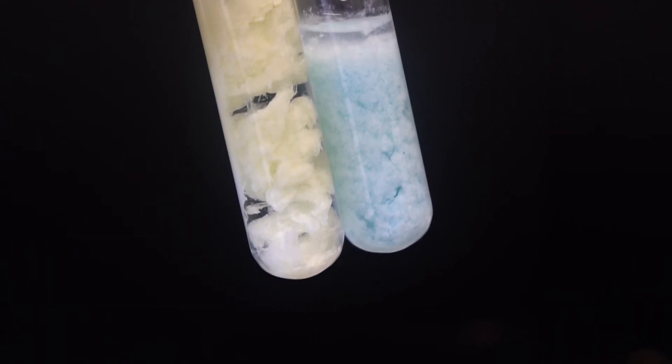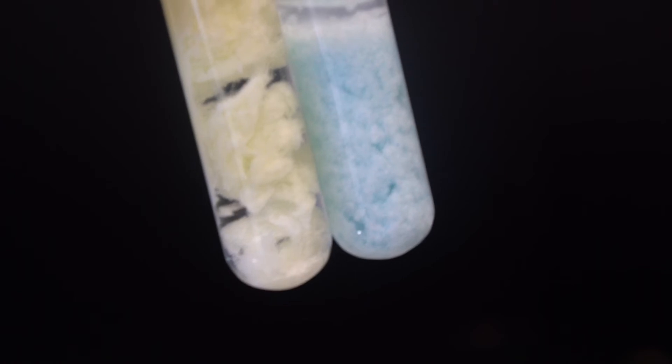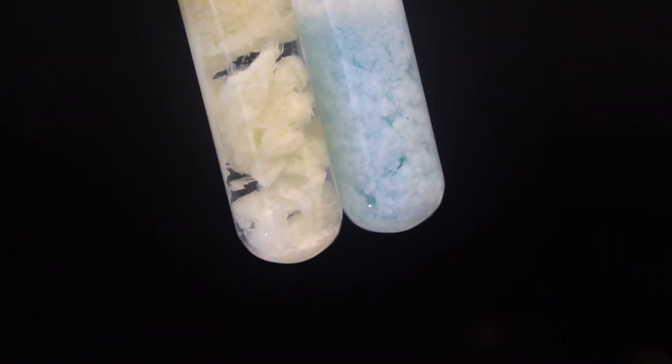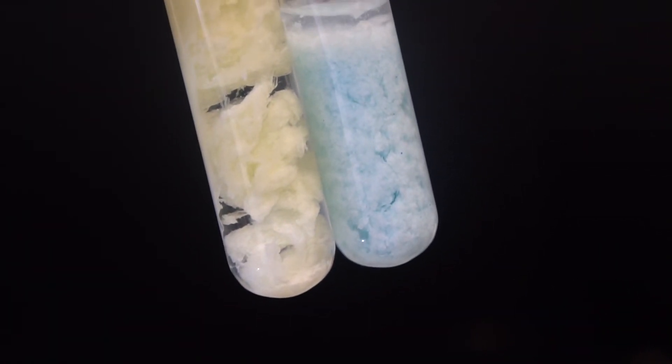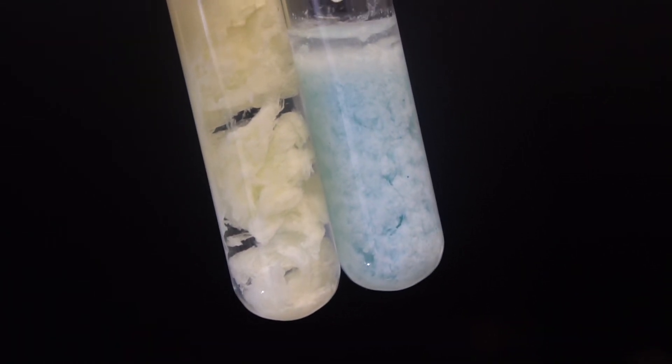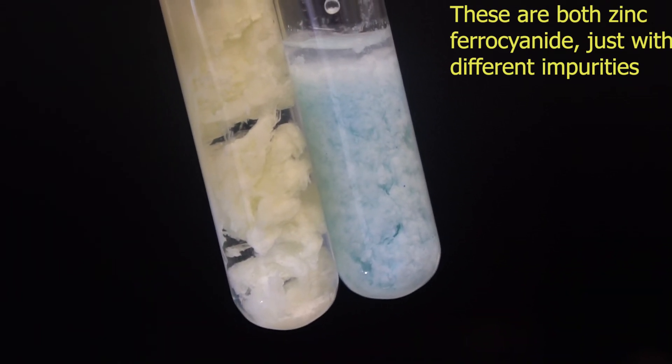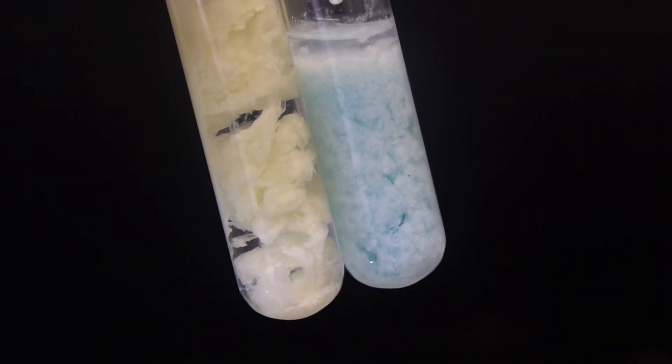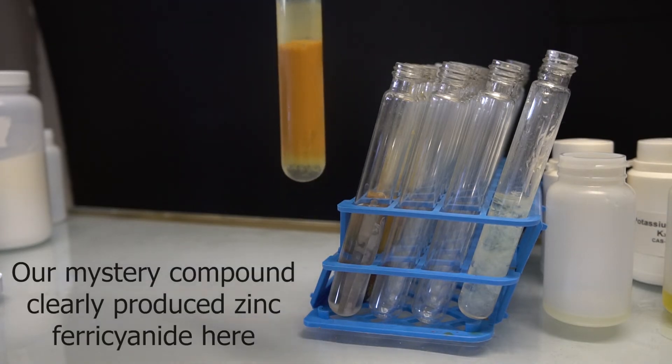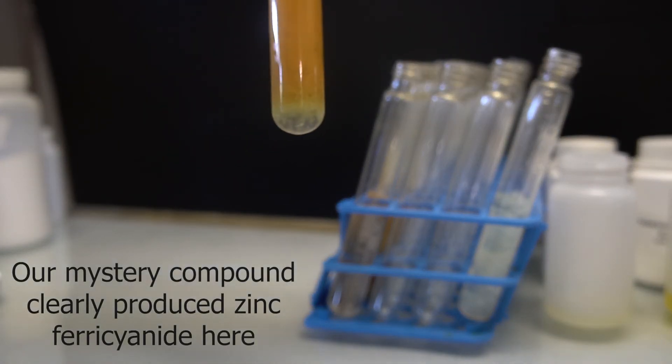So now it was finally time to test our mystery substance, which we had dissolved in hydrochloric acid. Reacting this with potassium ferrocyanide gave a slightly bluish precipitate with exactly the same texture and consistency as the previous zinc ferrocyanide precipitates. Reacting with potassium ferricyanide gave an orange-brown precipitate.